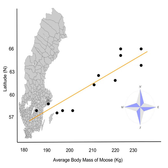Rapoport's rule is an eco-geographical rule that states that latitudinal ranges of plants and animals are generally smaller at lower latitudes than at higher latitudes.